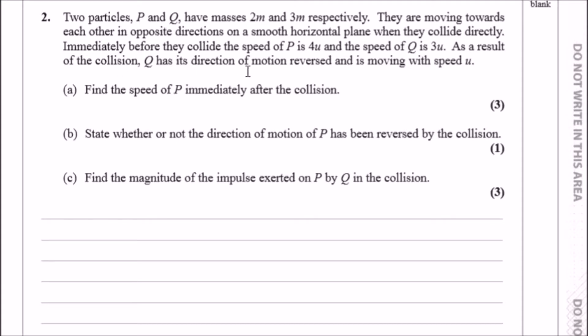As a result of the collision, Q has its direction of motion reversed and is moving with speed u. What I would do firstly is draw this out. Let's imagine this is P and this is Q, and they both have masses 2m and 3m.